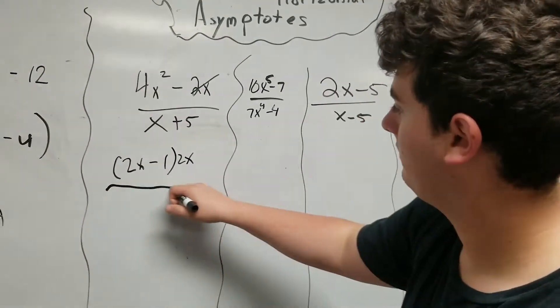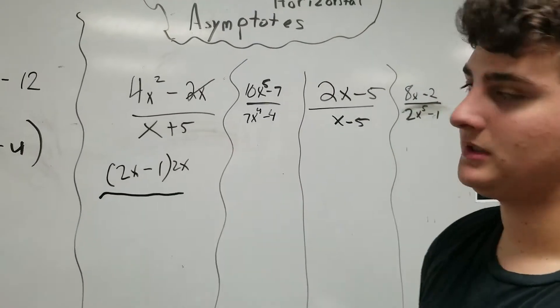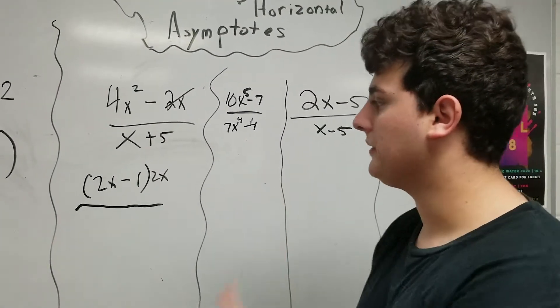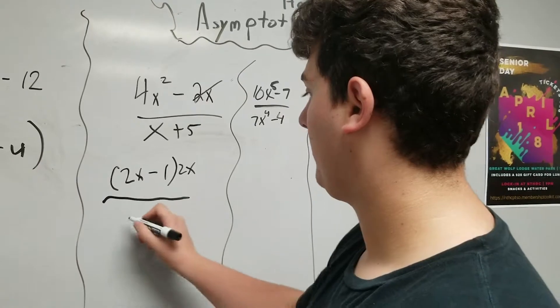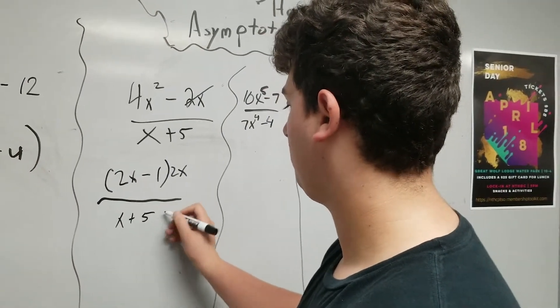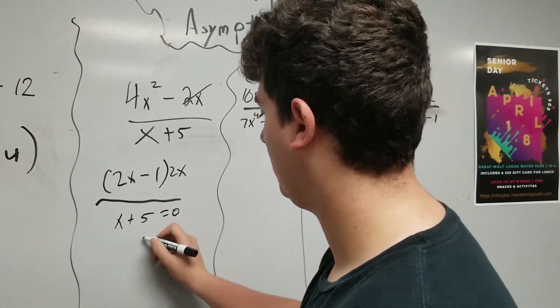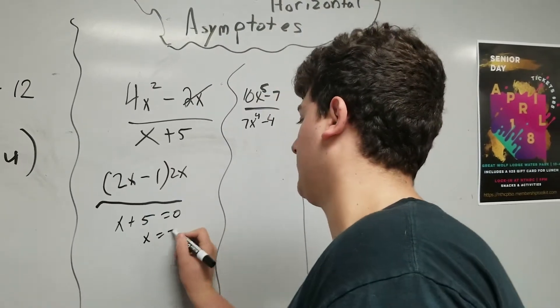On the bottom half, the denominator, we still have that x plus 5 that we need to equal to 0. So we know that x plus 5 to equal 0 has to become x equal to negative 5.